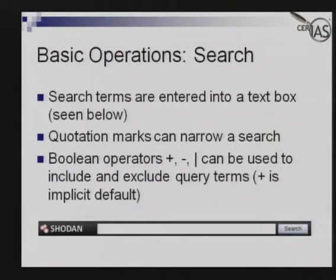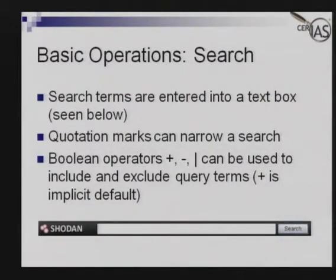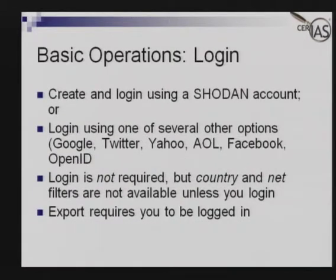The first 10 to 15 minutes of this talk is basic background about Shodan and how to use it, but the bulk of the presentation I want to spend on case studies. Search terms are entered into a text box. You can use quotation marks to narrow a search, and Boolean operations to include or exclude certain terms — excluding certain information is very useful for filtering data. There are two ways to use Shodan: you can use it anonymously without an account, or you can log in using Google, Twitter, Yahoo, AOL, Facebook, or OpenID credentials, or create a dedicated Shodan account.